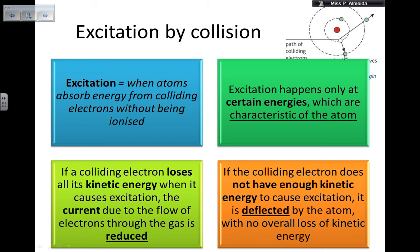The energy values for each orbital are very specific to the element. For example, one atom might have energy levels at 5 and 10 electron volts, while a different element might have levels at 5 and 15 electron volts — a difference of 10 eV. These levels are characteristic of the atom's composition and how its orbitals are arranged. By observing the jump, you can identify which element is present.